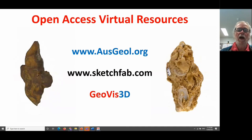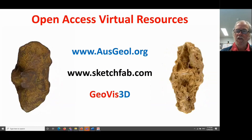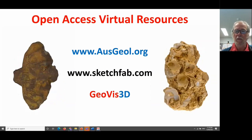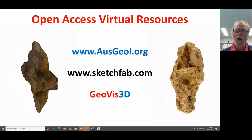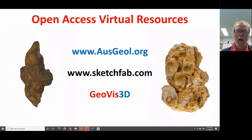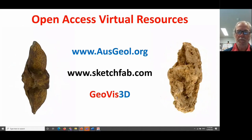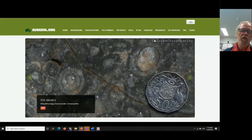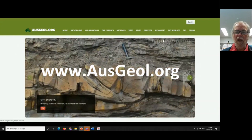I'd like to outline where some of these virtual resources reside so that you can go and have a look at them. The two principal online repositories from our perspective are the AusGeol library and our library within Sketchfab. I'll also talk about our software called GeoVis3D. First of all, let's have a look at AusGeol — AusGeol.org is the virtual library of Australia's geology, housed at the University of Tasmania on a server, giving access to localities all across Australia.